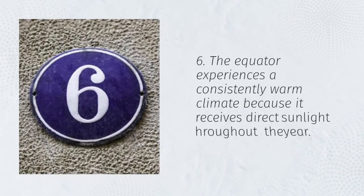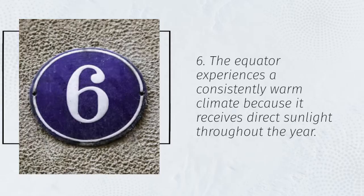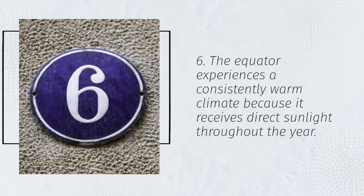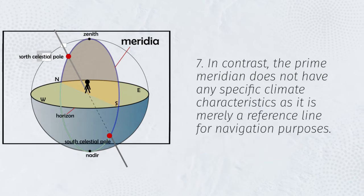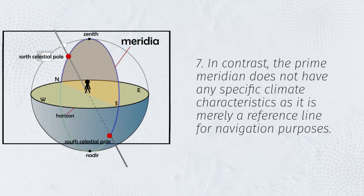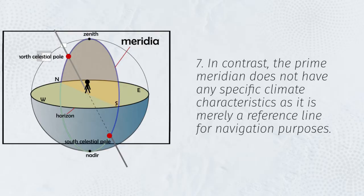6. The equator experiences a consistently warm climate because it receives direct sunlight throughout the year. 7. In contrast, the prime meridian does not have any specific climate characteristics as it is merely a reference line for navigation purposes.